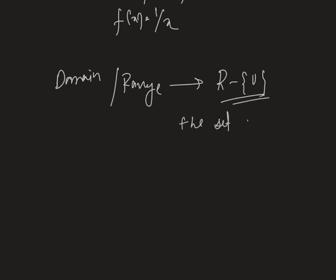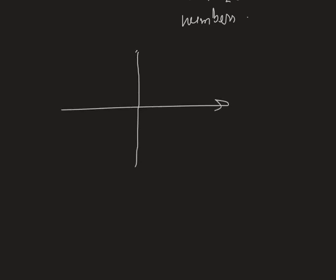The set of all non-zero real numbers. Now we try to visualize this function. Let us take the two axes — this is the y-axis and this is the x-axis. The function looks like this: y equals to 1 by x.